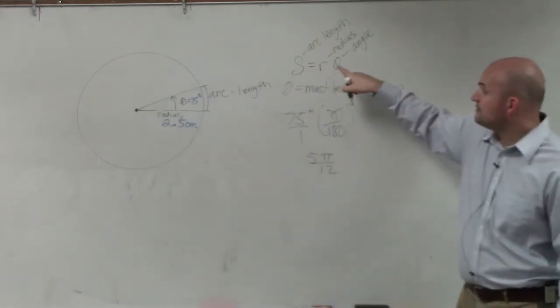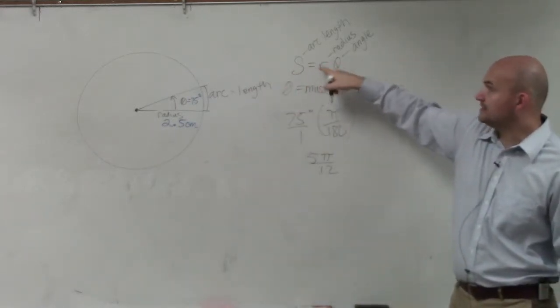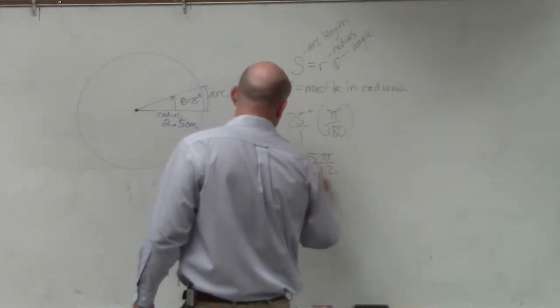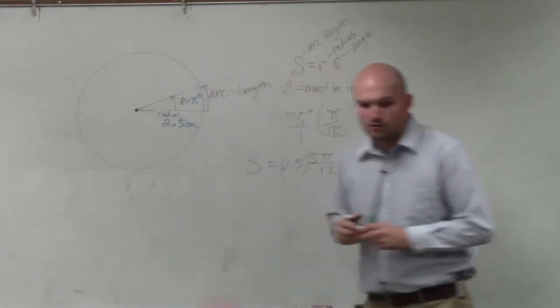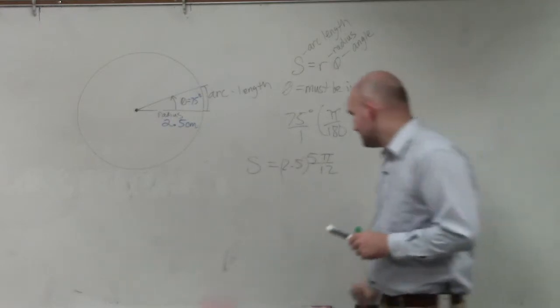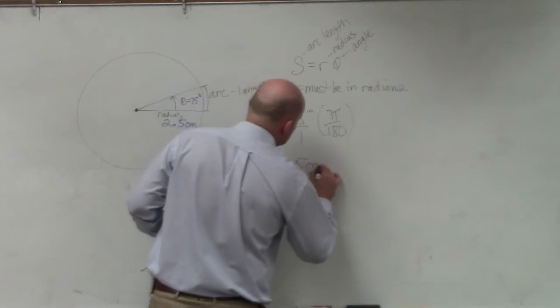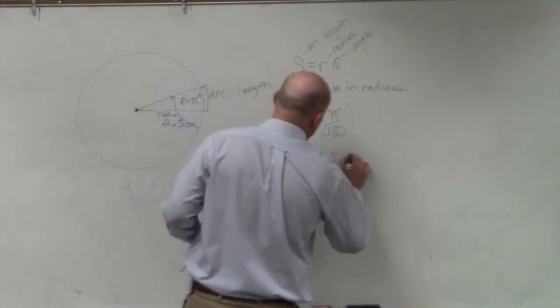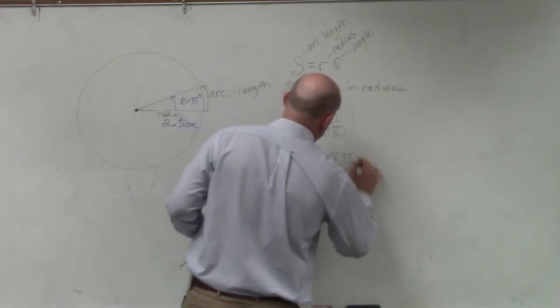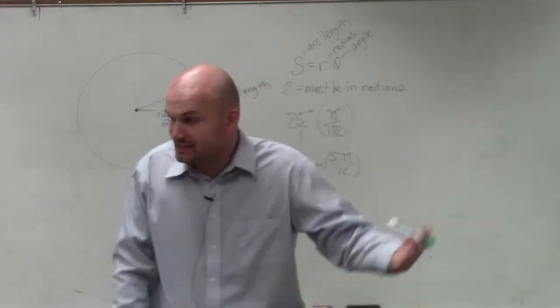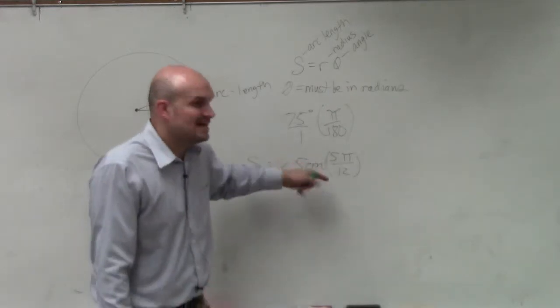Then to follow my formula, it's just arc length equals radius times theta. So s equals 2.5 times 5 pi over... Well, oops, I'm sorry. It's 2.5 centimeters times 5 pi over 12. Right? We have a unit attached to this problem, so we're going to continue the unit. When we're talking about centimeters, we want to evaluate, we want to approximate what that is going to be.